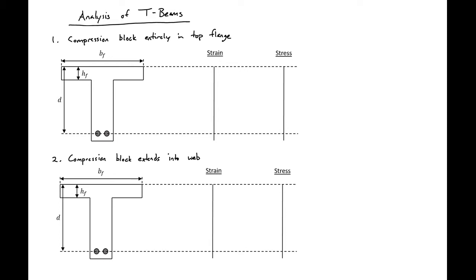The first case we can have our compression block entirely in our top flange. So when bending occurs we'll have a neutral axis or a strain diagram that looks something like this with our compression fiber strain 0.003 and our strain in our steel.